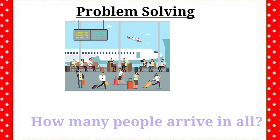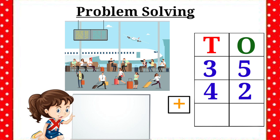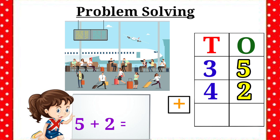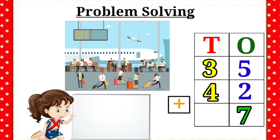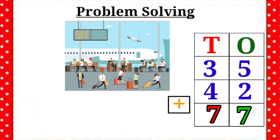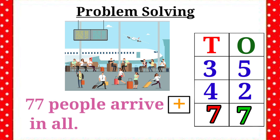Very good. Now we are going to write the correct sign and the given numbers. Now let's add the 1's place first. 5 plus 2 is equal to 7. Let's write the number 7 in the 1's place. Then add the 10's place. 3 plus 4 is equal to 7. Let's write the number 7 in the 10's place. So, 35 plus 42 is equal to 77. The answer is 77 people arrive in all.